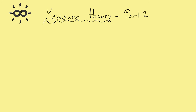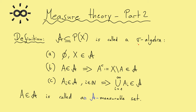Welcome back to measure theory. This is part 2 and we still have to talk a little bit about sigma algebras. Here you can see the definition from last time. In short, a sigma algebra is just a family of subsets of a given set X which fulfills three rules: the empty set and the full set are always in the sigma algebra, for each set the complement is also in the sigma algebra, and we can form arbitrarily countable unions inside the sigma algebra. All sets that are elements in the sigma algebra are called measurable sets.